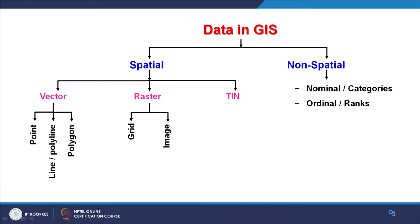Under the non-spatial category, we have various types of non-spatial data. One is nominal or category data, then ordinal or ranks data — we will have a separate discussion on this — then interval data, ratio data, cyclic data, and last is counts and amounts. So these 6 types of non-spatial data have so far been implemented in GIS. If any new development takes place in mathematics or computer science, and if it is beneficial in GIS, it would definitely be incorporated in the future as well.